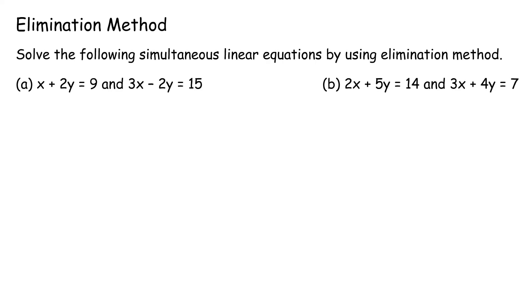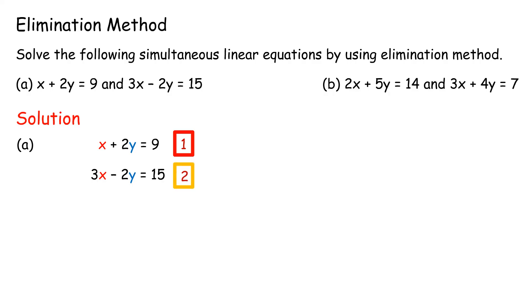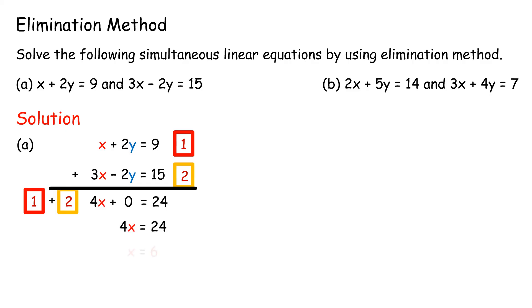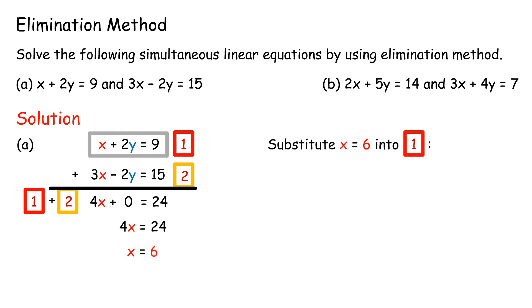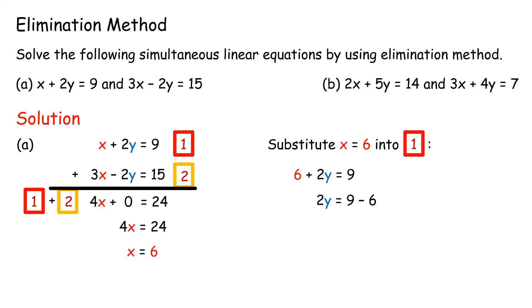Elimination method example (a): x + 2y = 9 and 3x - 2y = 15. Adding equation 1 and equation 2: 4x = 24, so x = 6. Substitute x = 6 into equation 1: 6 + 2y = 9, 2y = 3, y = 3/2. Thus x = 6 and y = 3/2.